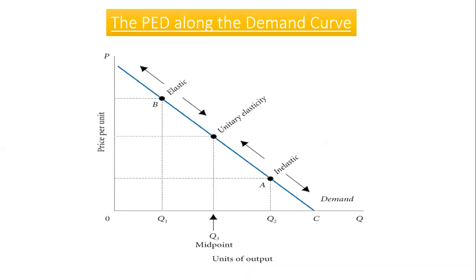As noted earlier, despite having a constant slope, elasticities differ along the demand curve. The price elasticity decreases as we move downward along a demand curve — demand is elastic on the upper part, inelastic on the lower part, and passes through unitary elasticity in between.